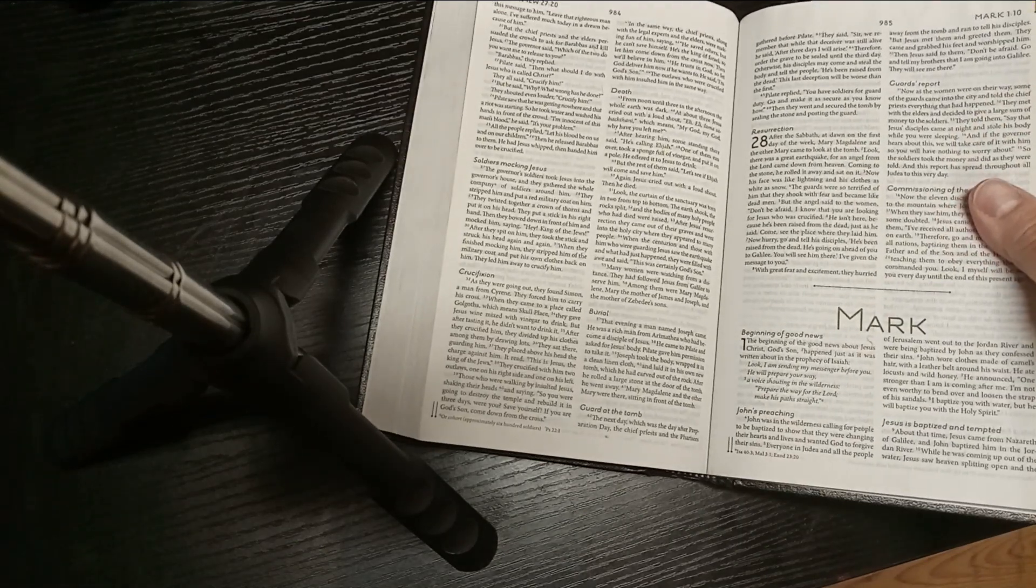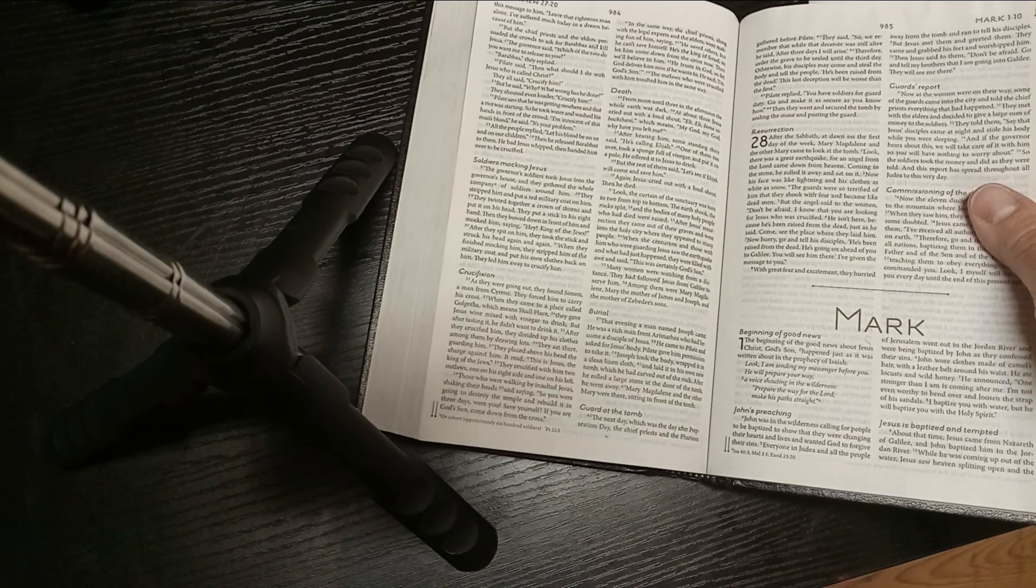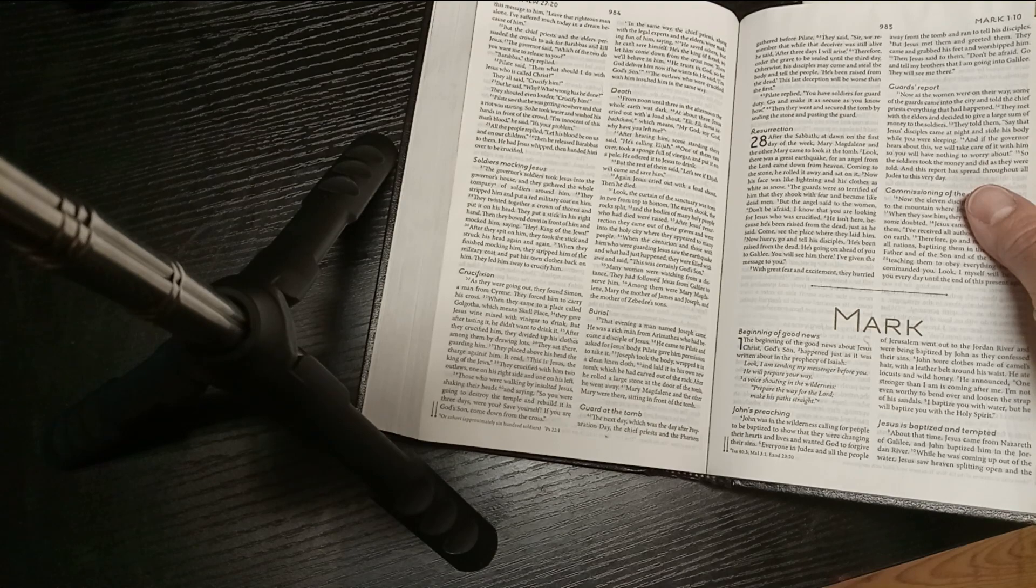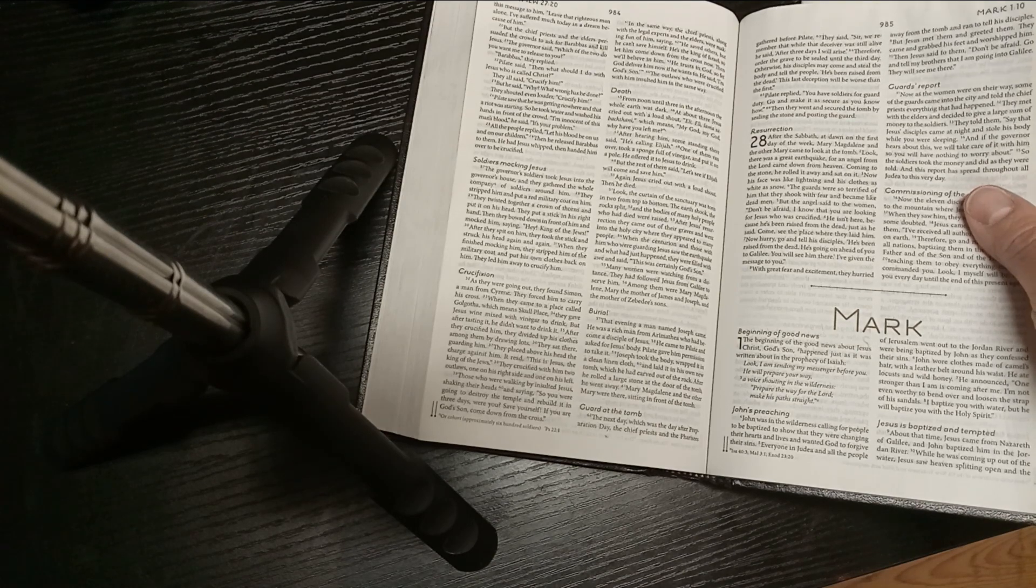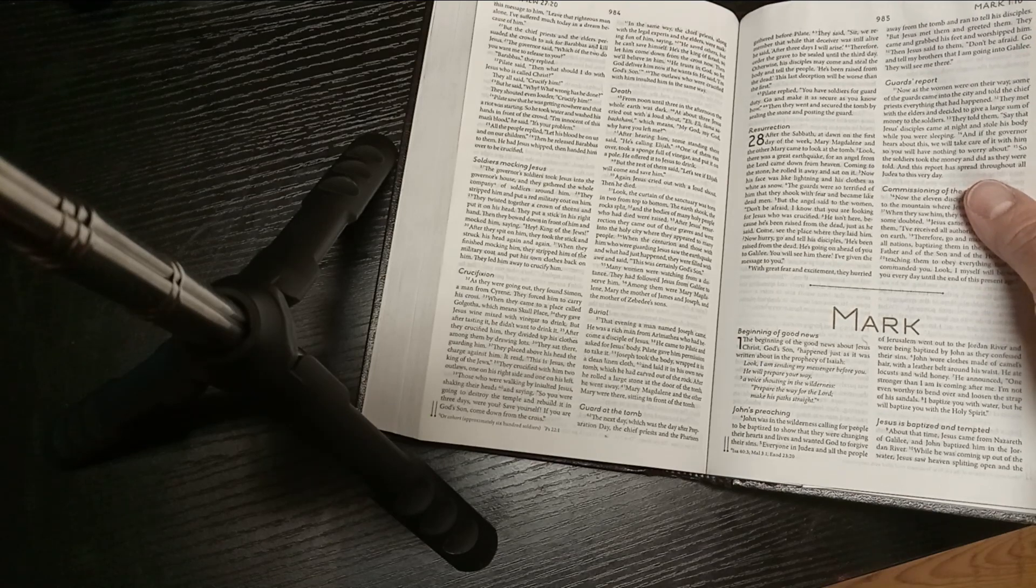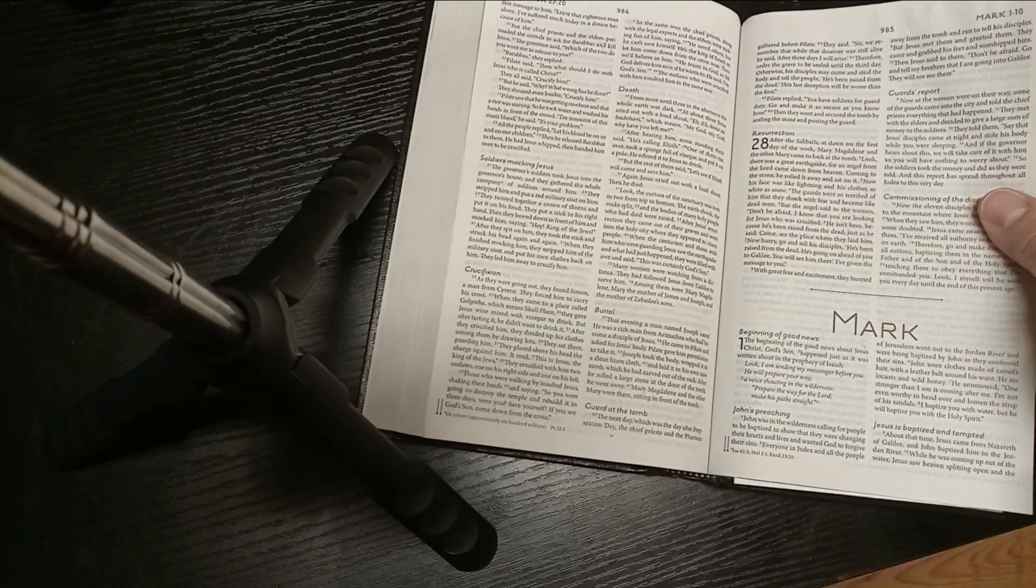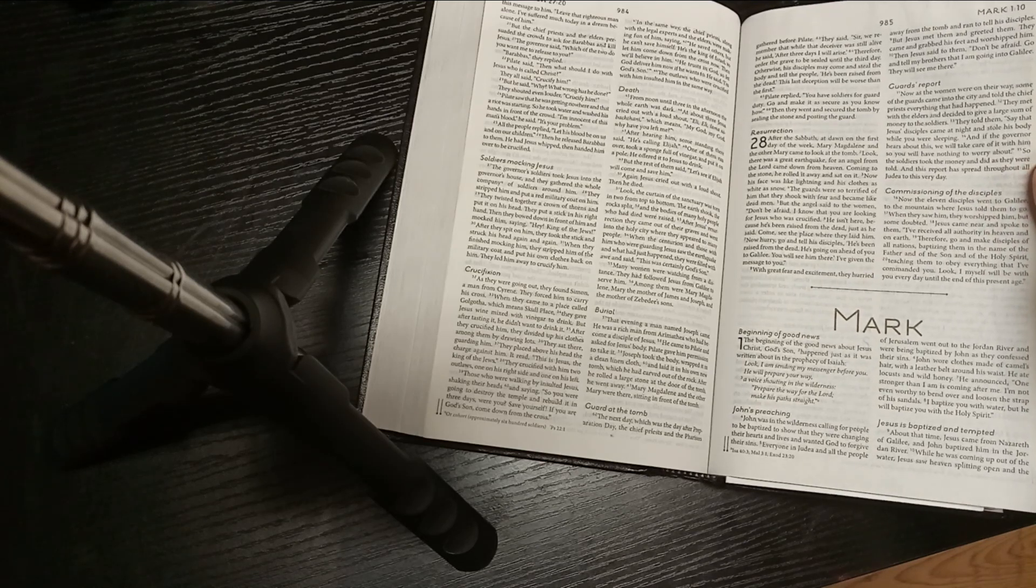Now, as the women were on their way, some of the guards came into the city and told the chief priests everything that had happened. They met with the elders and decided to give a large sum of money to the soldiers. They told them, 'Say that Jesus' disciples came at night and stole his body while you were sleeping. And if the governor hears about this, we will take care of it with him, so you have nothing to worry about.' So the soldiers took the money and did as they were told.